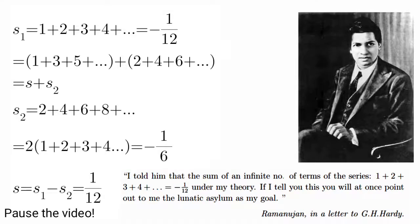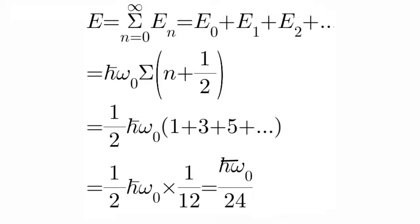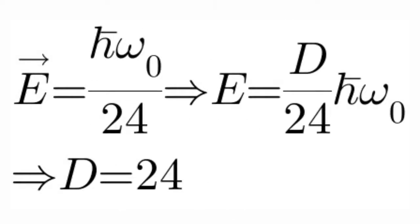We can derive that the sum of all odd natural numbers is 1 by 12, so we get that the total energy is ℏω₀ over 24.